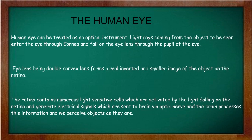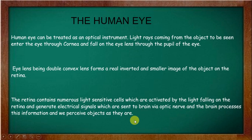The image formed on the retina by the falling light generates an electric signal, which is sent to the brain and processed. This is how we perceive and see objects.